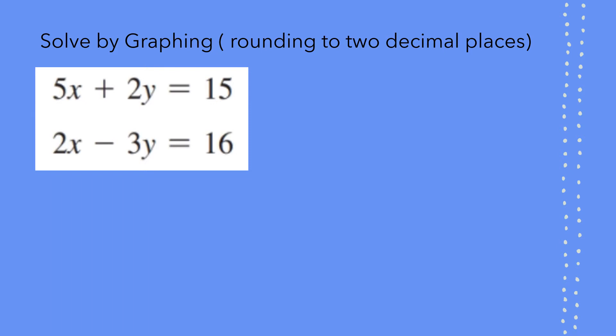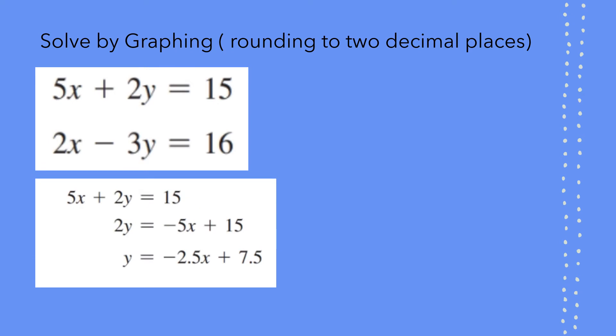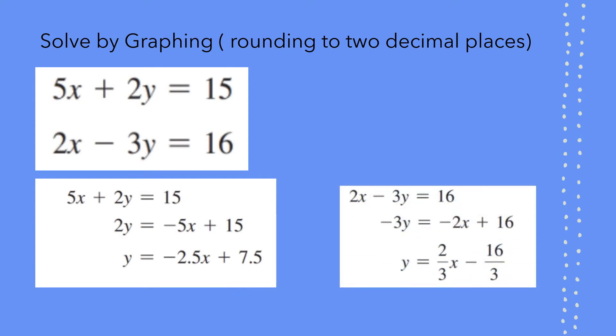The equations are 5x plus 2y equal to 15 and 2x minus 3y equal to 16. We can rewrite that as 2y equal to negative 5x plus 15, or y equal to negative 2.5x plus 7.5. And the second equation can also be written as y equal to 2 third of x minus 16 by 3. So you are isolating y by itself.